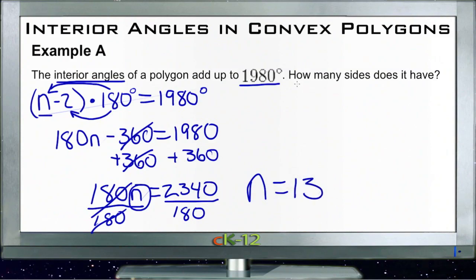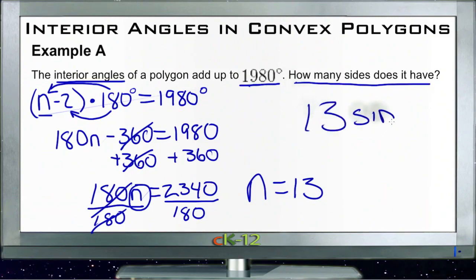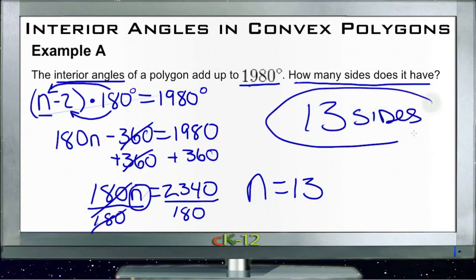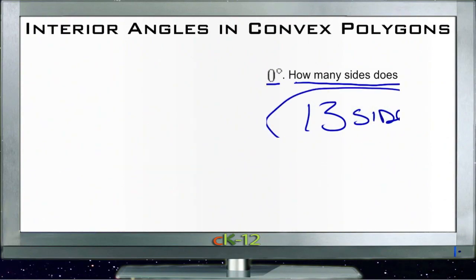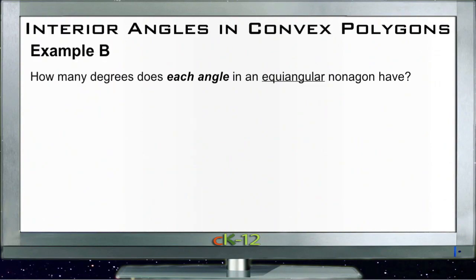So that tells us that if we have a regular polygon with 1980 total degrees, then the number of sides it has to have is 13. It has 13 sides. Now let's take a look at example B.